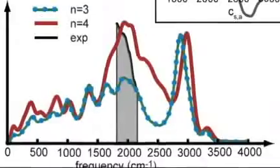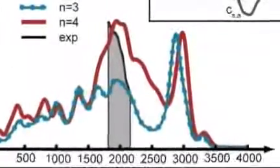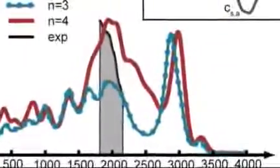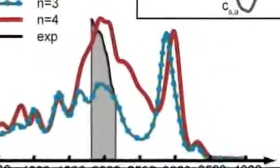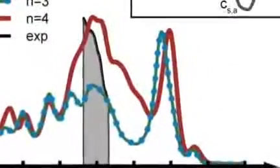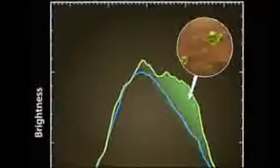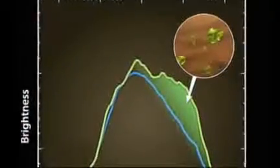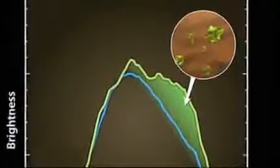Every molecule has a unique infrared spectral signature. There are certain wavelengths of light that a molecule likes to absorb and certain wavelengths it doesn't like to absorb.